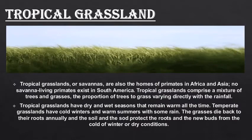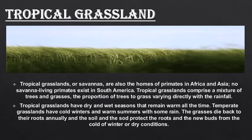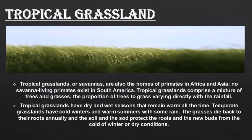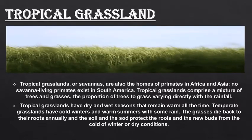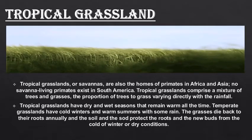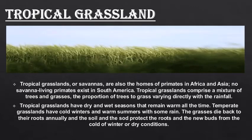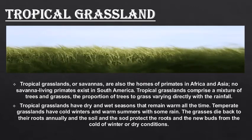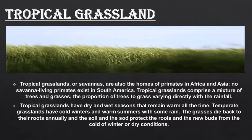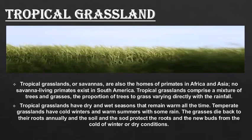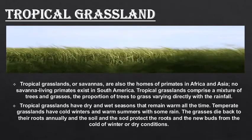Tropical grasslands are also called savannah and are found on either side of the equatorial region in Africa, part of the Brazilian plateau, Deccan plateau of India, and northern Australian area. These grasslands are known by different names in different parts of the world, such as parkland in America, llanos in Venezuela and Colombia, and campos in Brazil, Uruguay and Argentina.